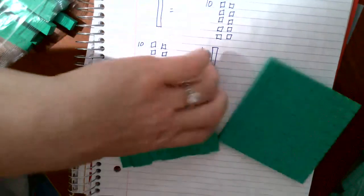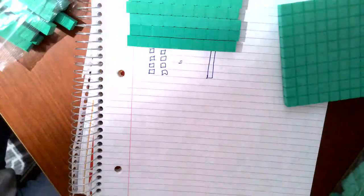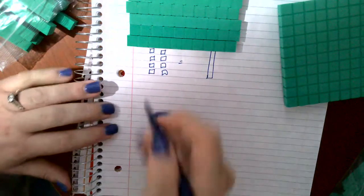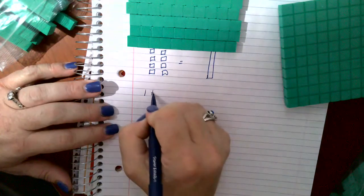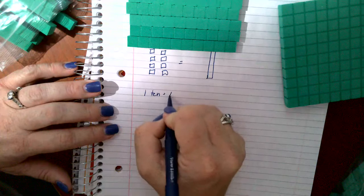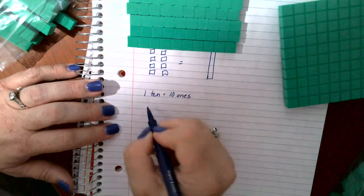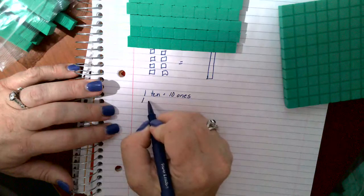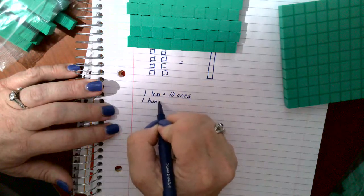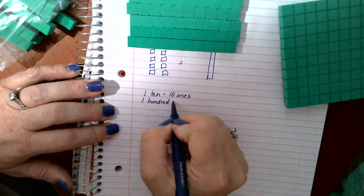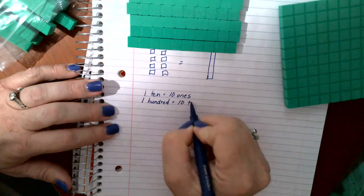Okay? So, we don't have to draw all that. We can say one ten equals ten ones. One one hundred equals ten tens.